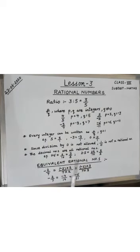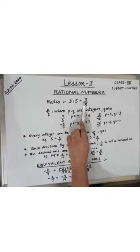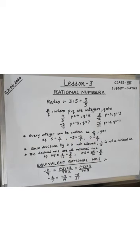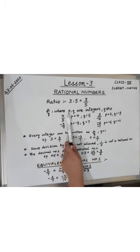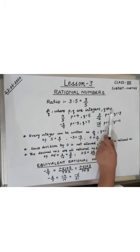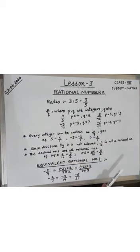The word rational comes from the term ratio. We know that a ratio like 3 is to 5 can be written in the form 3 upon 5. Thus any number that can be expressed in the form P upon Q, where P and Q are integers and Q is not equal to 0, is called a rational number.